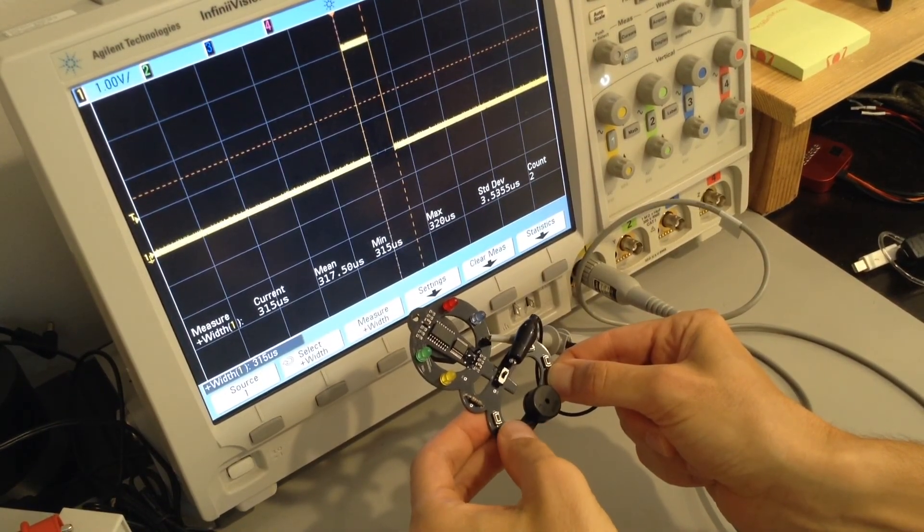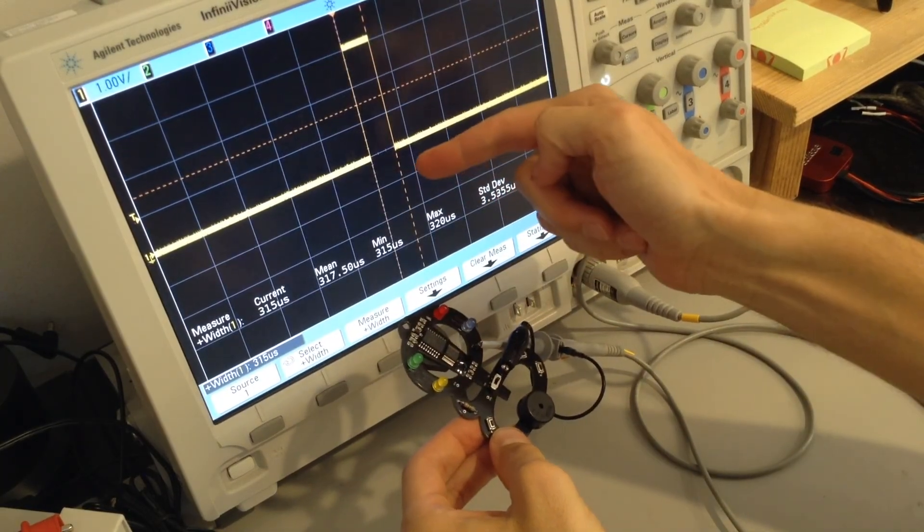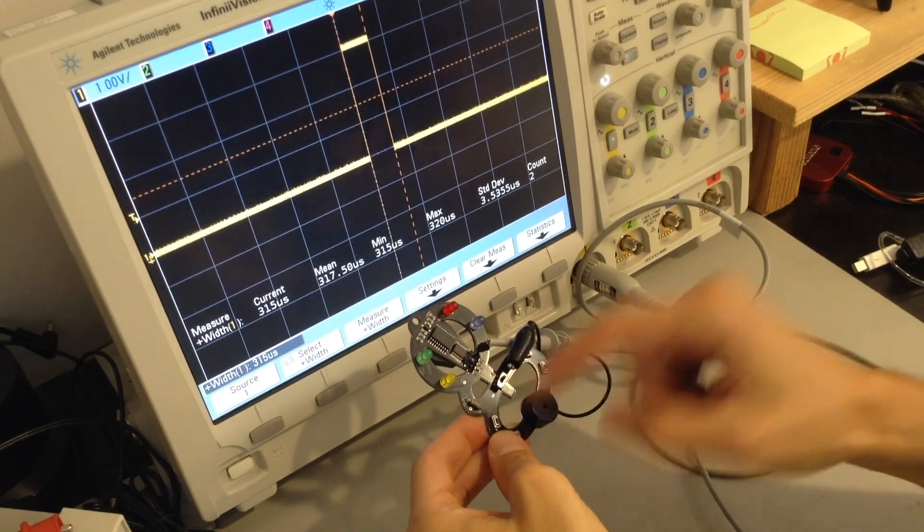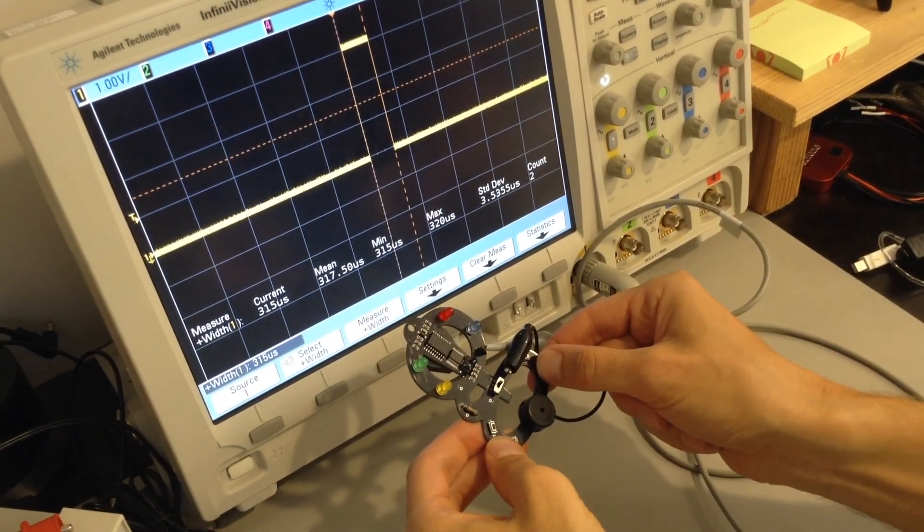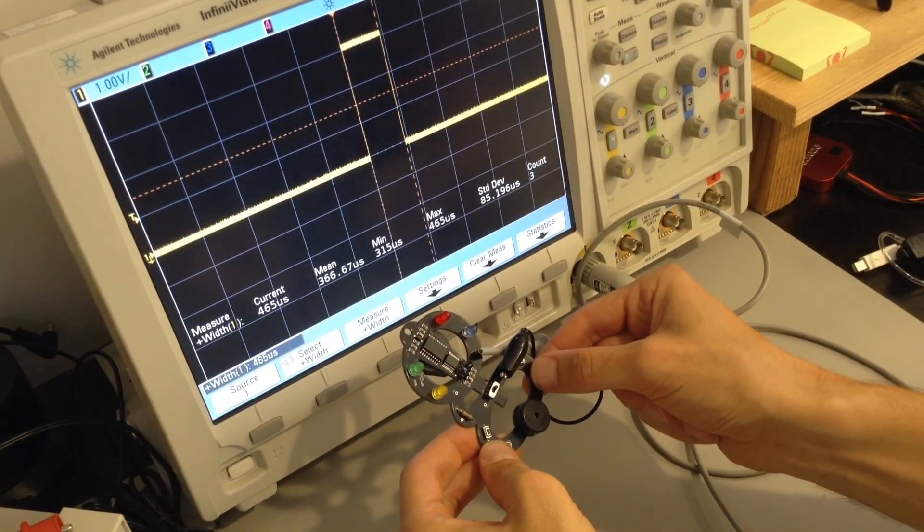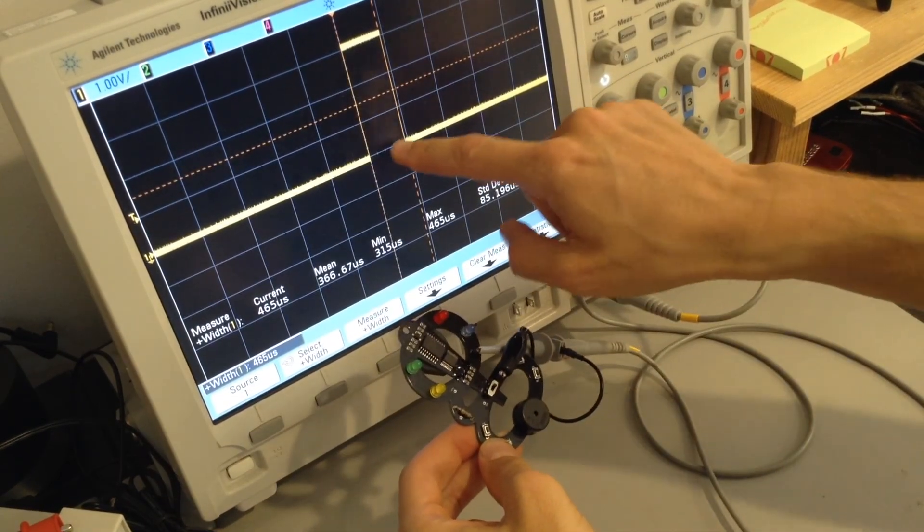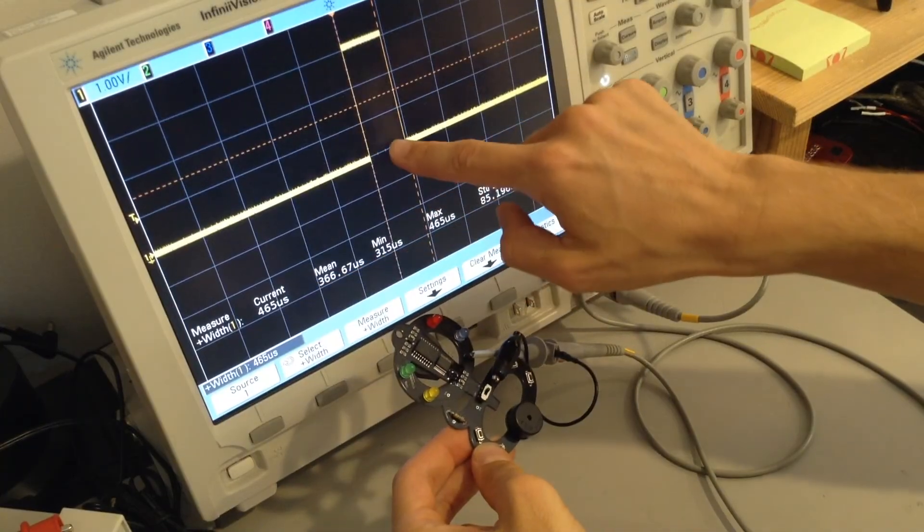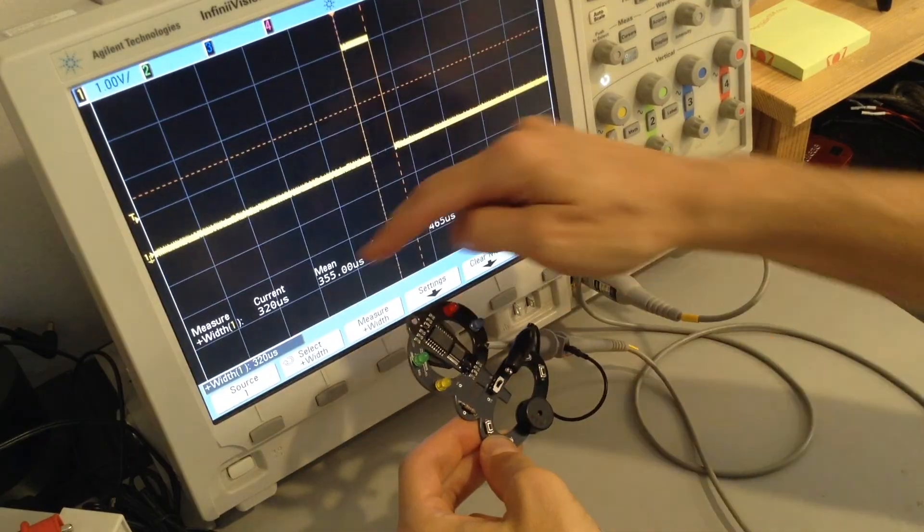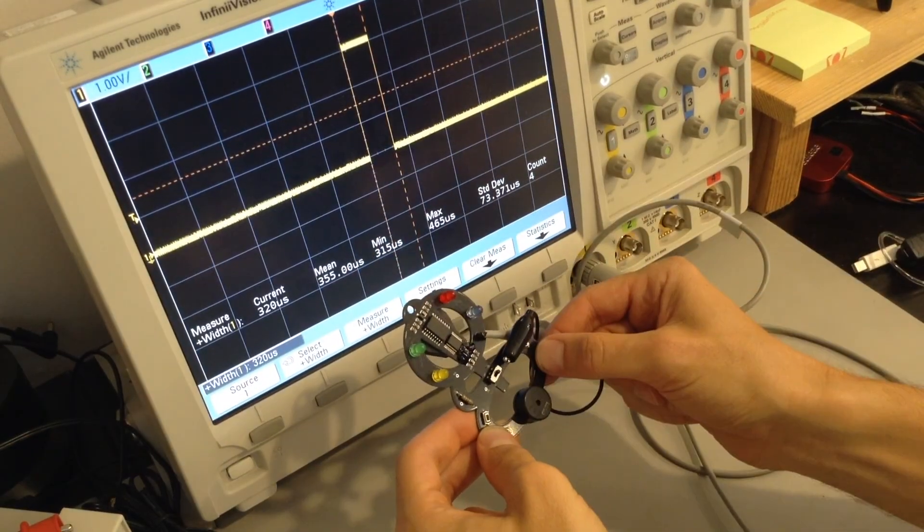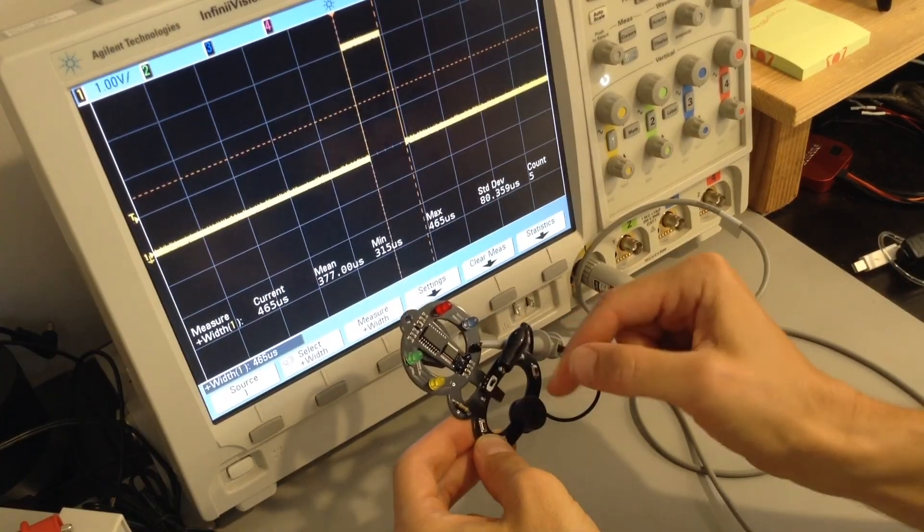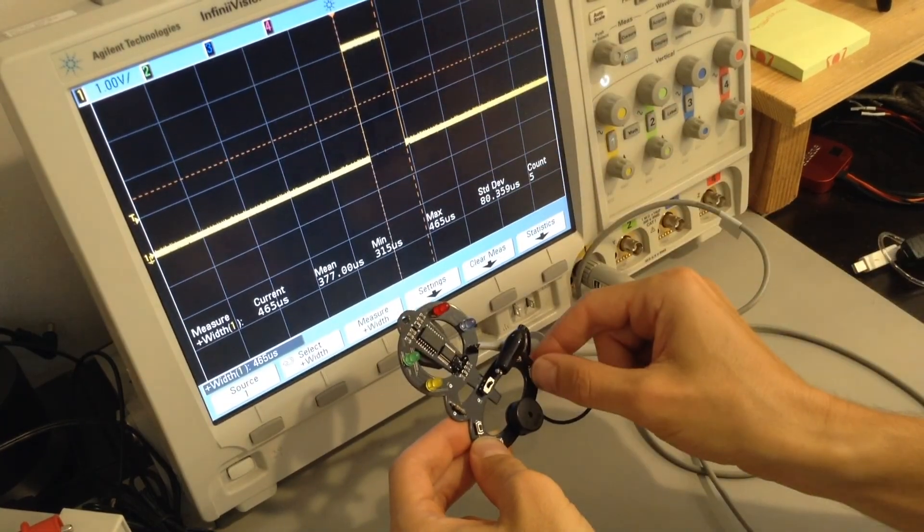Yellow. 315 microseconds. So those are close enough, that probably means both of these buttons are incorrect for the first byte. Let's go ahead and try blue. Don't worry that you can't see the LED, that's intentional. So we try blue and now the width actually goes up to 465 microseconds. Let's try red. Now we're back down at 320 microseconds. So it looks like blue is the widest of the button presses, which means that's the first byte of our pin.